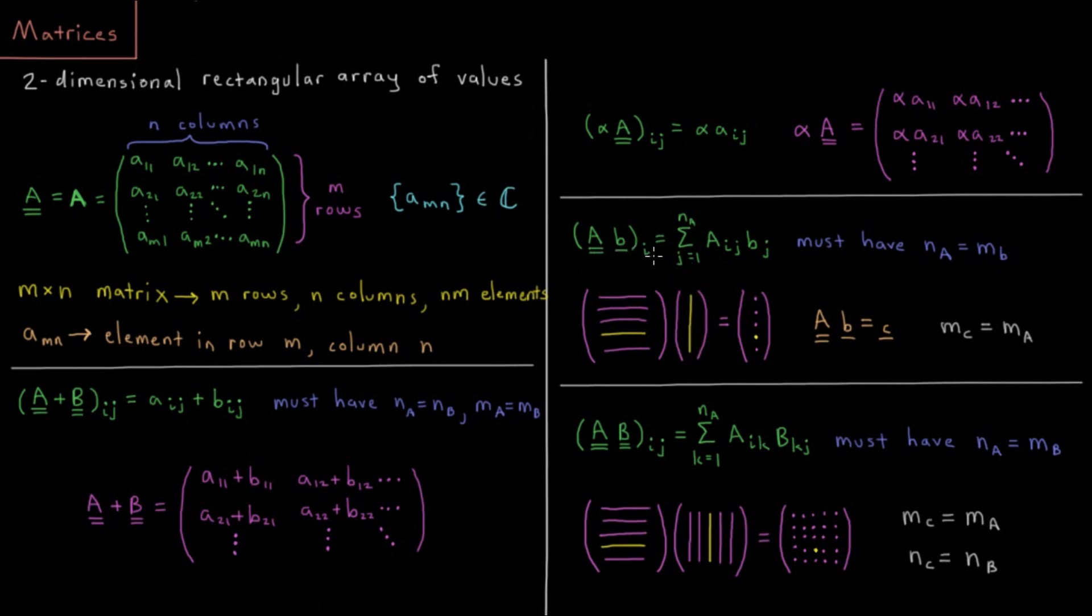The elements of the resulting vector are going to be a sum over from j equals 1 to the number of columns of A, of Aij times B sub j.